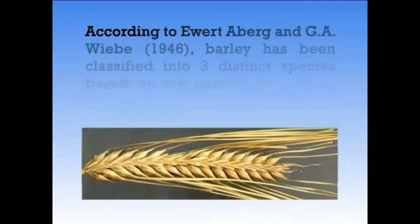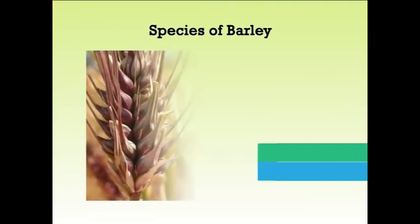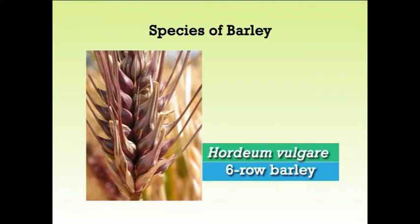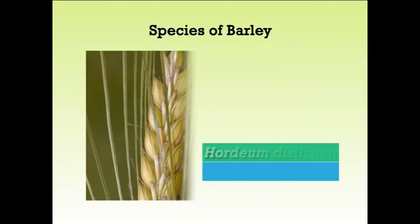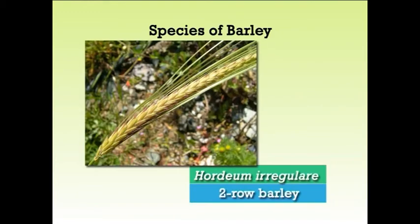According to Erbuck and Weibei, 1946, barley has been classified into three distinct species based on the number of rows of grain and arrangement. The species are: number one, Hordeum vulgare, which is six-row barley; number two, Hordeum distichon, which is two-row barley; and the third one is Hordeum irregulare, which is also a two-row barley.